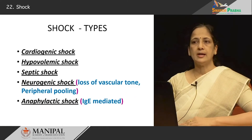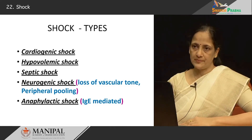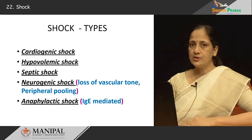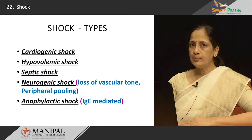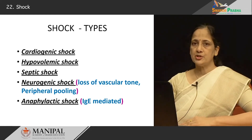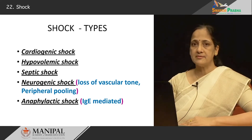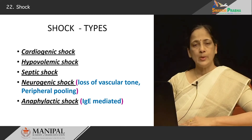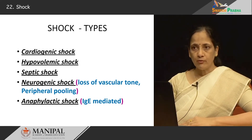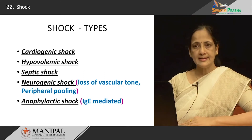Let us look at the different kinds of shock. There are basically five main types: cardiogenic shock, which occurs when there are different cardiac diseases; hypovolemic shock, when there is a loss of blood volume; septic shock, when there is bacteremia; neurogenic shock, when there is loss of vascular tone and peripheral pooling of blood; and anaphylactic shock, as occurs in hypersensitivity and is IgE mediated. We will focus on the pathogenic mechanisms involved in the first three types: cardiogenic, hypovolemic, and septic shock.